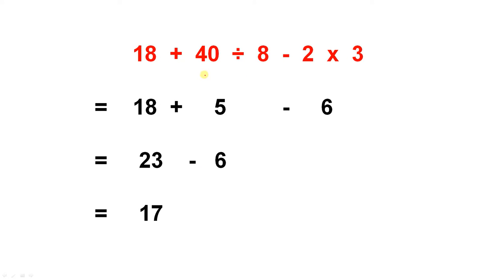In a similar manner, we must do the division first, and then we do the multiplication. 40 divided by 8 gives you 5. 2 times 3 is 6. All the signs have been carried down. 18 plus 5 gives you 23, and there's your 6. 23 minus 6 gives you 17.